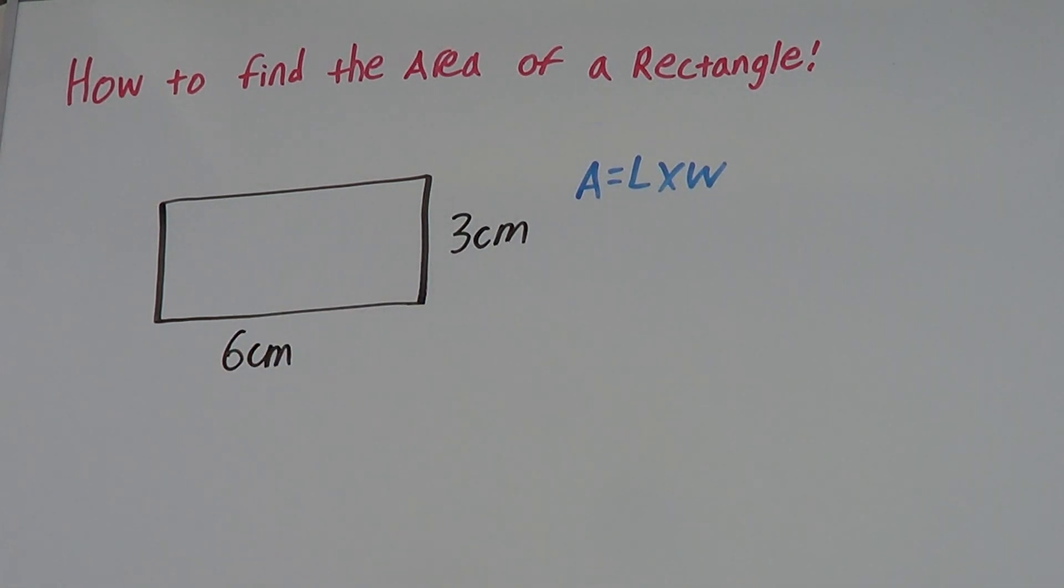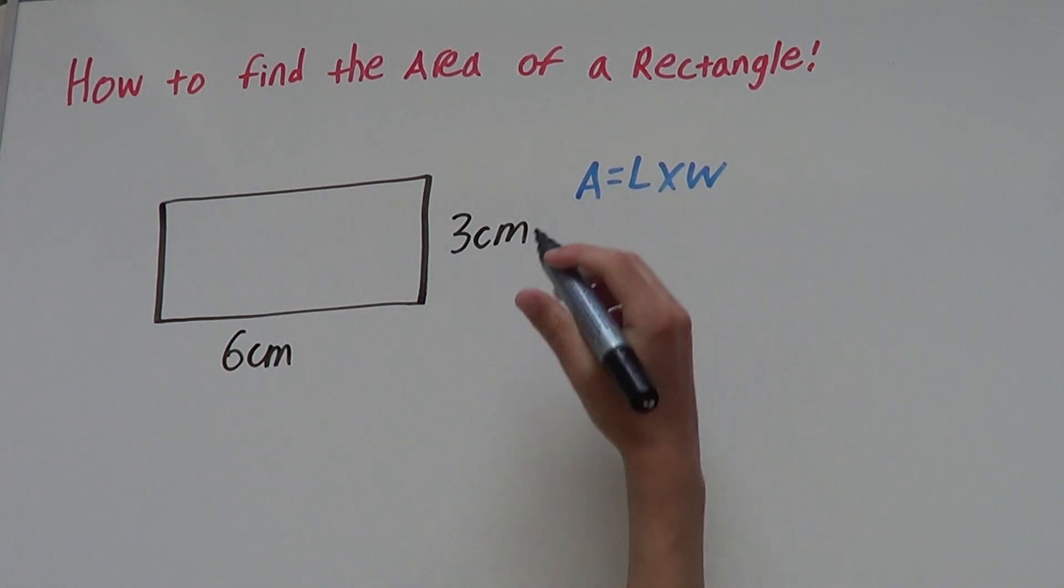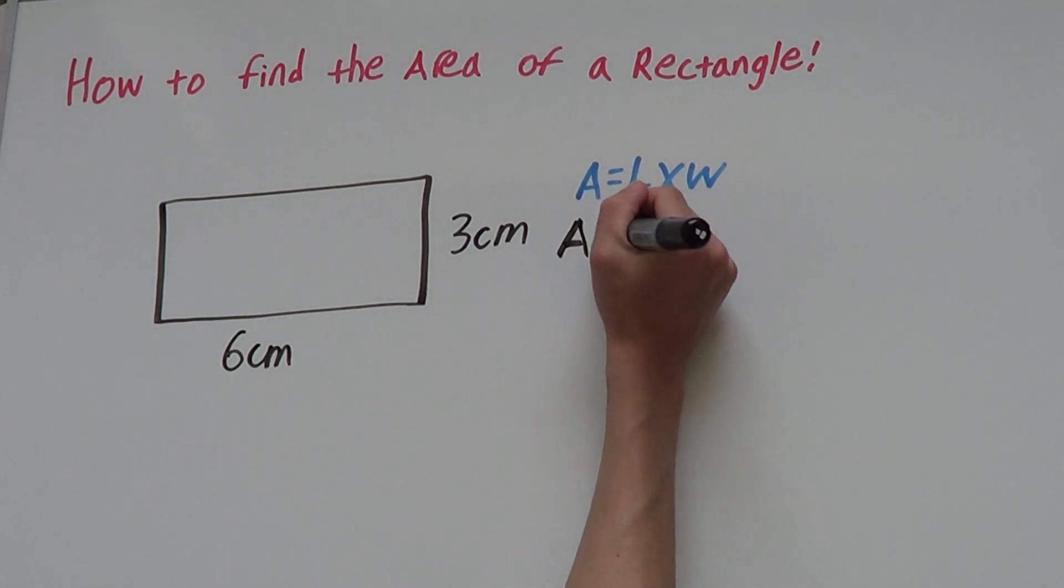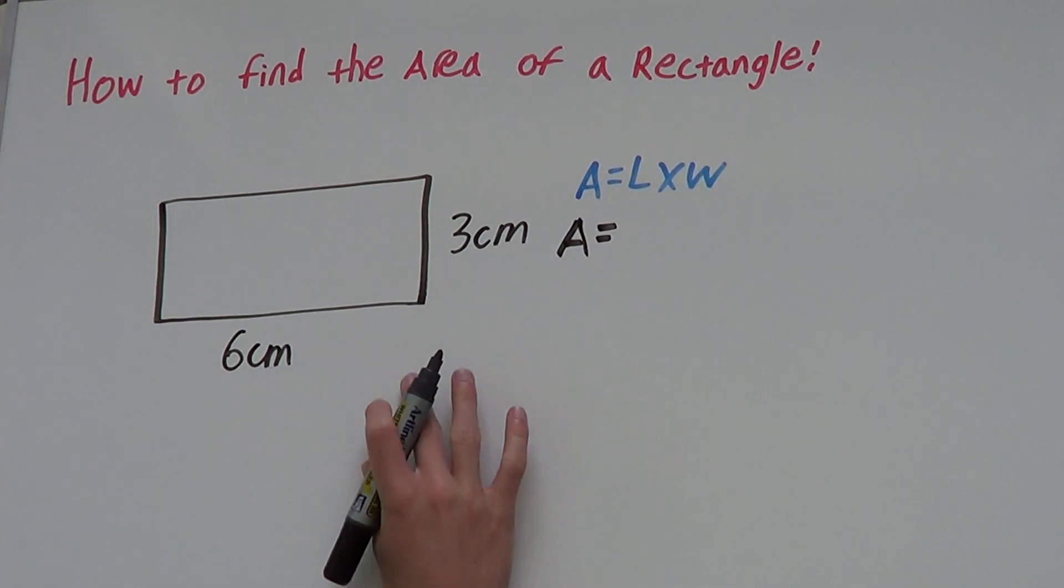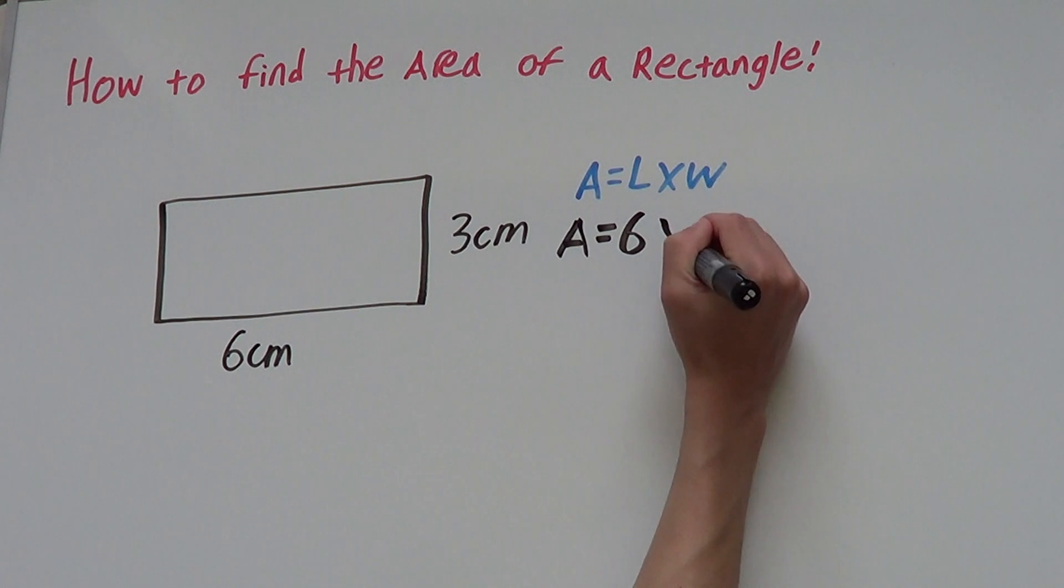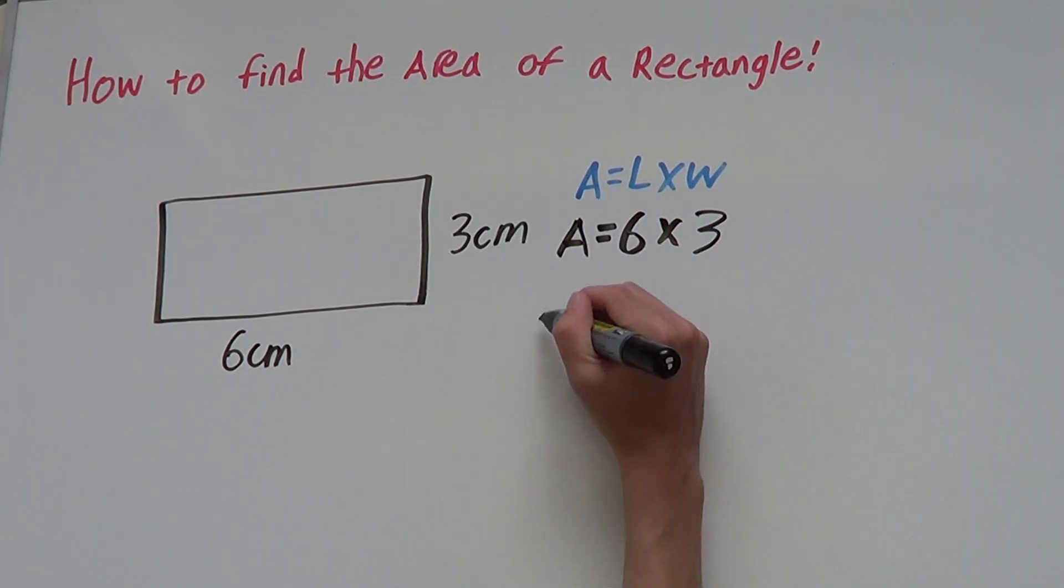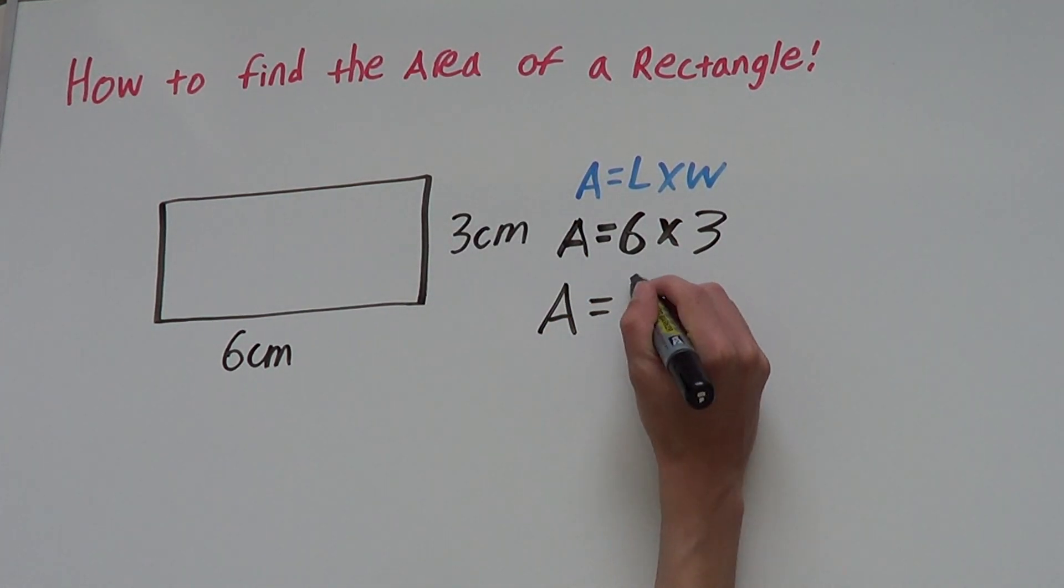To find the area of this rectangle we just pop our values in. A equals length which is 6 times width which is 3. Our area equals 6 times 3 which is 18.